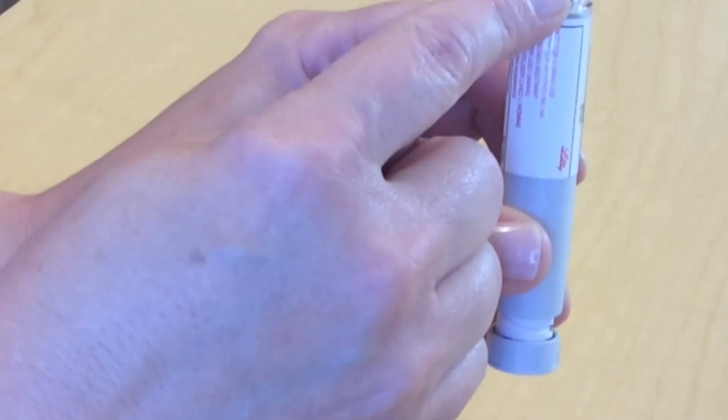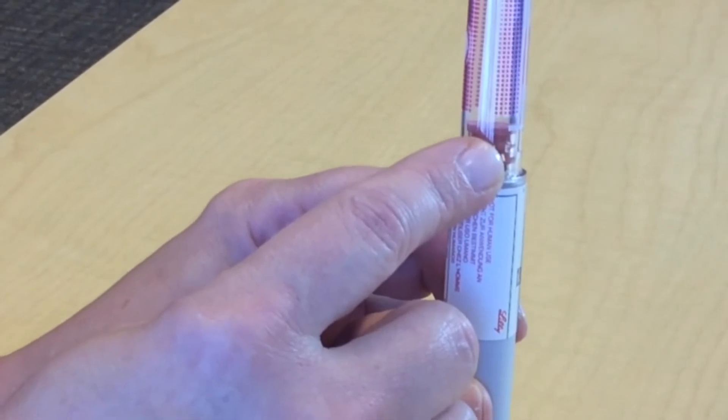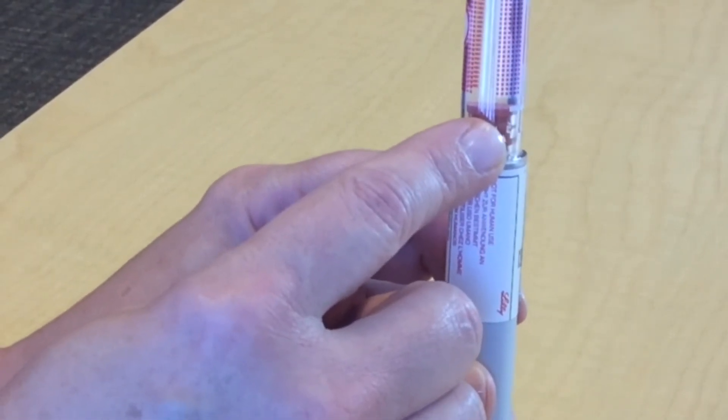Now inspect your insulin. If it looks evenly cloudy and white and there are no clumps, then it's safe for you to use.